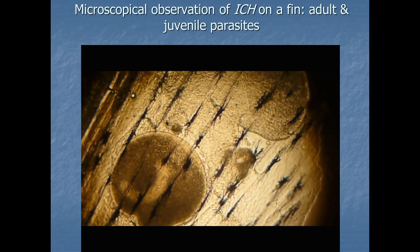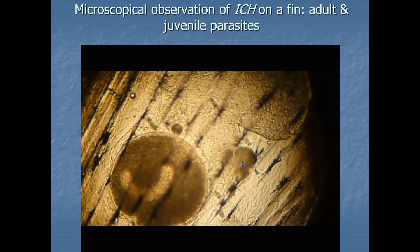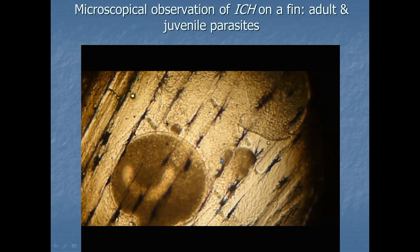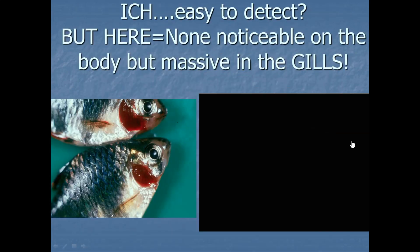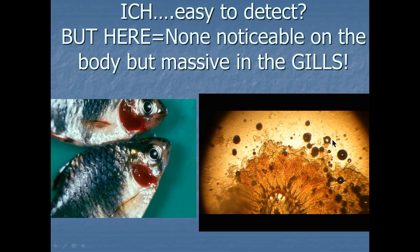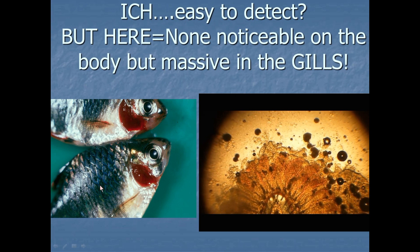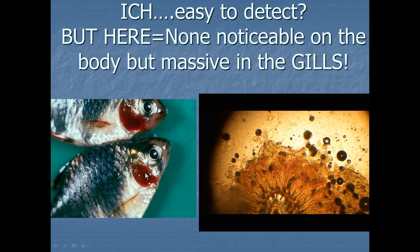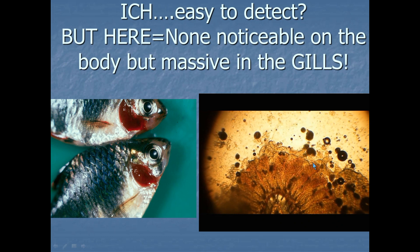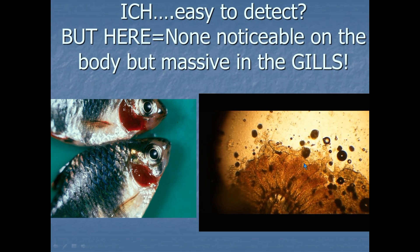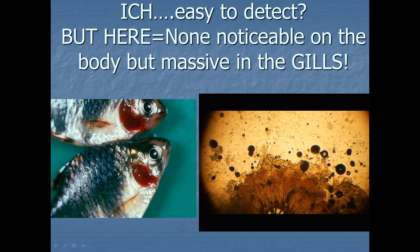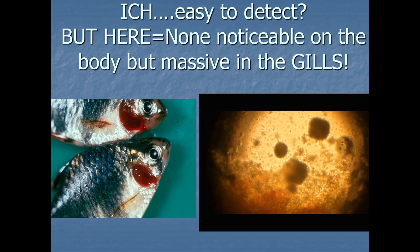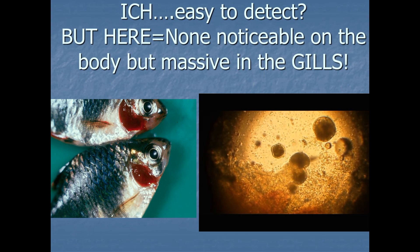In the microscope we can detect ick on a fin. You can see some small spots which are the juvenile stages, and here the large white spot with the typical nucleus. We can also detect it in the gills — here it was obvious, nothing to see on the skin of the barbs, but plenty of parasites in the gills which we couldn't see unless we used a microscope. There is a massive infection of white spots causing damage to the gills, which makes the fish suffer, getting secondary infections and possibly dying.